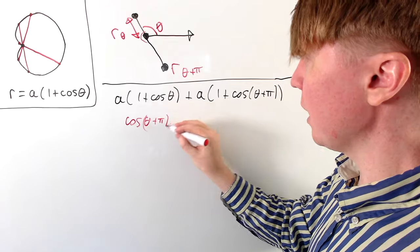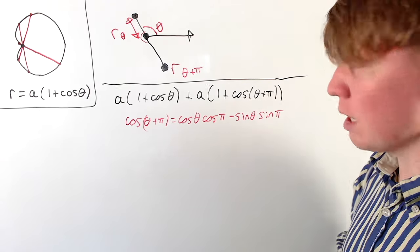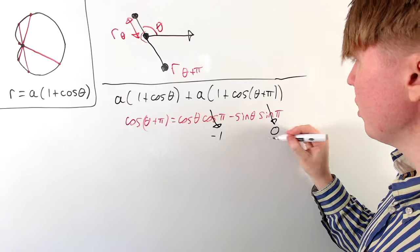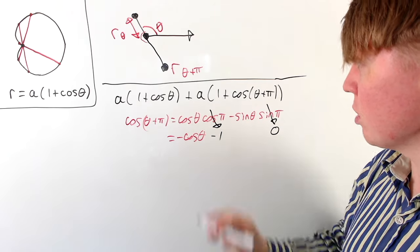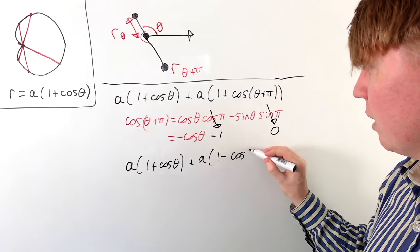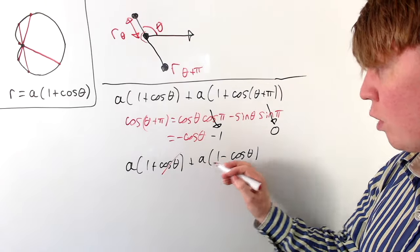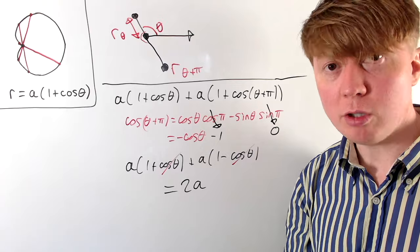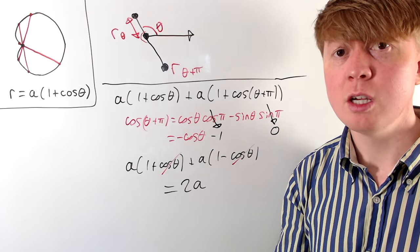Using the angle sum formula: cos(θ + π) equals cos θ cos π minus sin θ sin π. Since cos π equals negative one and sin π equals zero, this simplifies to cos(θ + π) equals negative cos θ. Substituting in, the total chord length is A(1 + cos θ) + A(1 − cos θ). The cos θ terms cancel, leaving a total length of 2A, which is independent of theta. So the chord length is always constant, as long as it passes through the cusp at the origin.